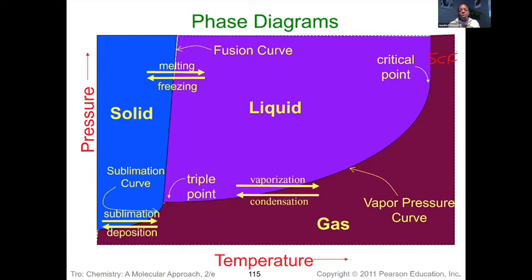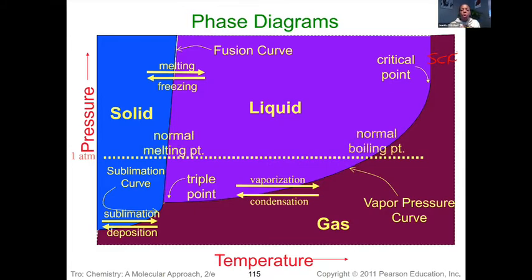We also have our triple point, which is the point right in the center of that Y that all three phases can simultaneously exist. And then we can make some predictions about what the boiling point and melting point would be, because that is the temperature in which the vapor pressure is equivalent to the external pressure outside. So a lot of information we can get from here.